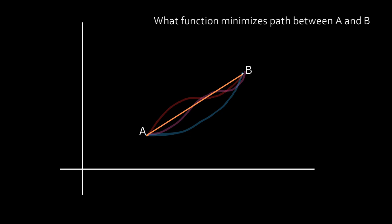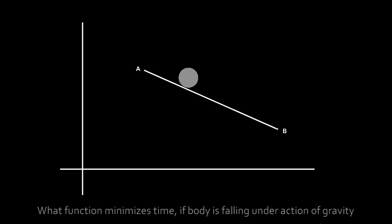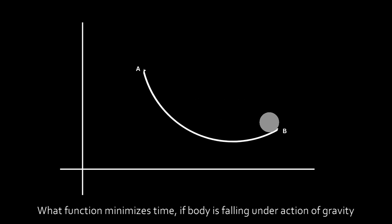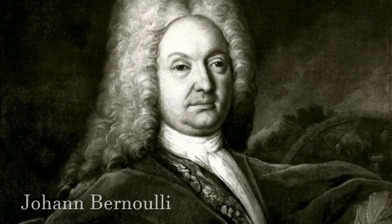Since another question may arise, what if the path required is the path such that if a ball rolls from point A to point B under the action of gravity, what path takes least time? This problem is called Brachistochrone Problem, which was solved by Johann Bernoulli.